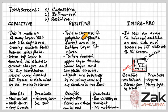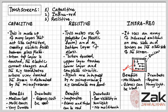Resistive touch screens make use of an upper layer of polyester — a form of plastic — and a bottom layer of glass. They used to be mounted over the ordinary screens of computers. When the top polyester layer is touched, the top and bottom layers complete a circuit. Signals are then sent out, intercepted by a microprocessor, and interpreted to determine the coordinates of where the screen was touched.